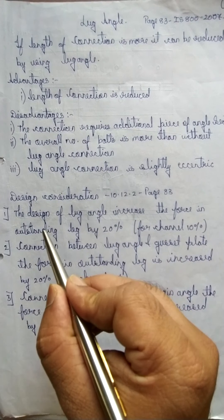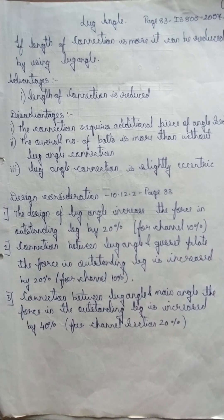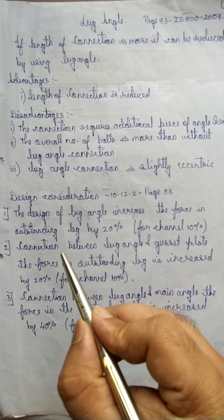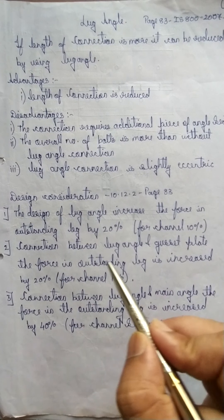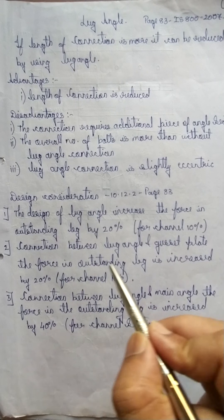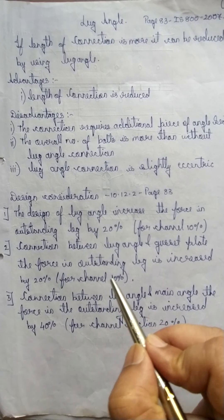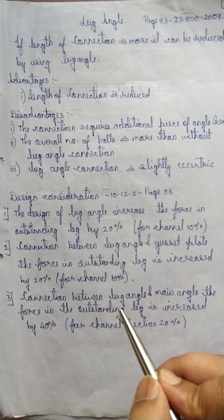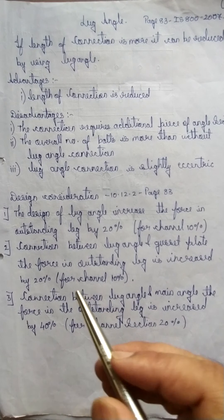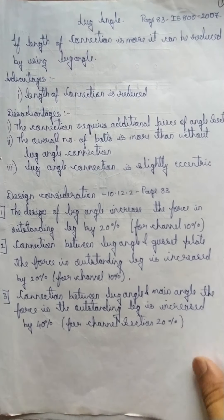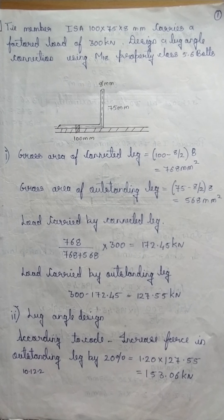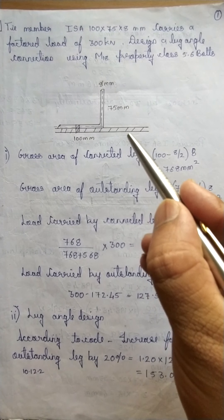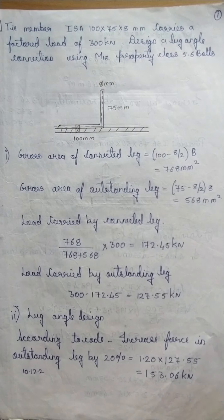The first step: increase the force in the outstanding leg by 20 percent for angles, and 10 percent for channels, for the connection between lug angle and gusset plate. For the connection between lug angle and the main angle, the force in the outstanding leg is increased by 40 percent for angles and 20 percent for channels. Since our numerical involves the connection between the gusset plate and the angle, let us start.